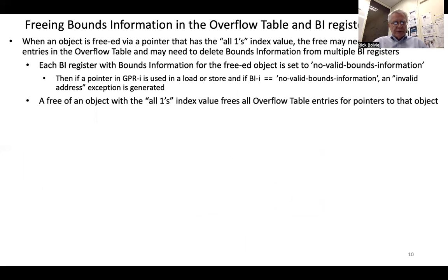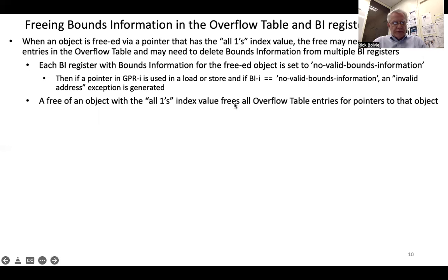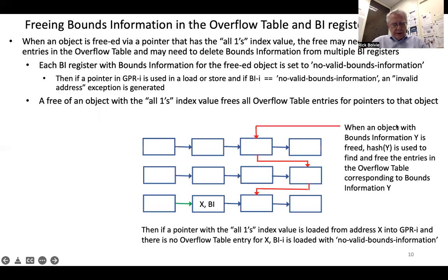When an object is freed via a pointer that has the all-ones index value, the free may need to free entries in the overflow table and invalidate bounds information registers. Each BI register with bounds information for the freed object is set to no valid bounds information. Then, if a pointer in GPR i is used in a load or store and BI i contains the no-valid-bounds-information value, an invalid address exception is generated. A free of an object with the all-ones index value frees all overflow table entries for pointers to that object — a hash of Y is used to find and free all entries in the overflow table corresponding to bounds information Y.